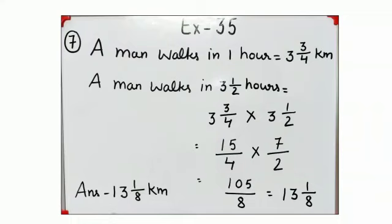What will be the statement? A man walks in one hour equals 3 and 3 by 4 kilometers. It is given. A man walks in 3 and 1 by 2 hours - you have to find it.